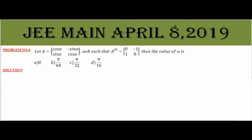Question number 4: Let A equal to the matrix [[cosα, -sinα],[sinα, cosα]], where α is a real number, such that A power 32 equal to the matrix [[0, -1],[1, 0]]. Then find the value of α.